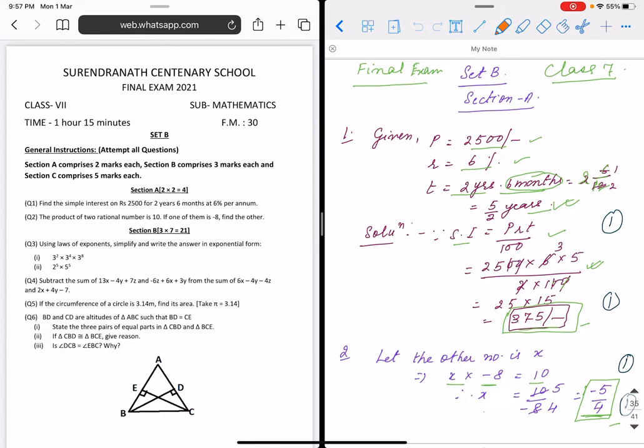Hello children, here I have taken the final exam Set B question paper, Class 7 Mathematics, Section A. I am starting with two marks each question.